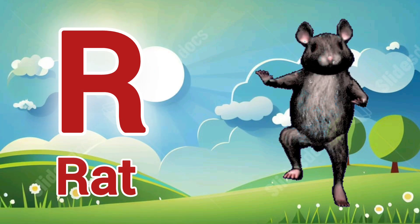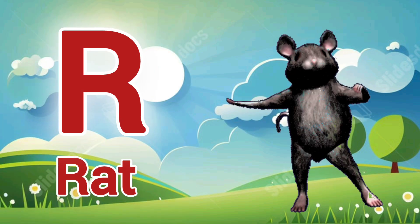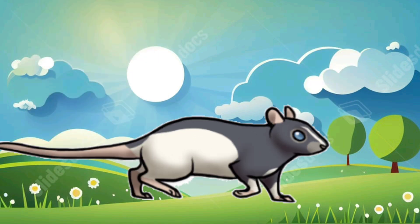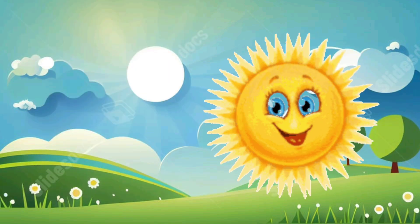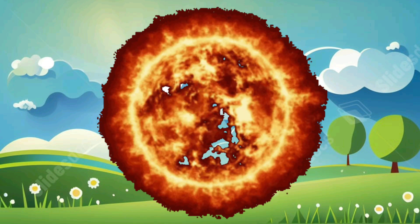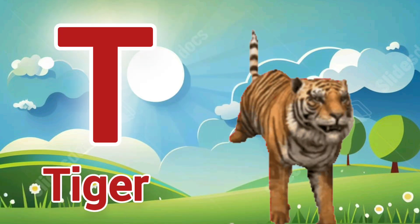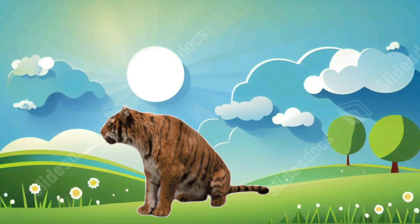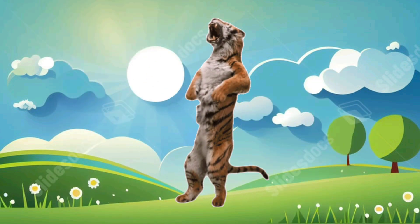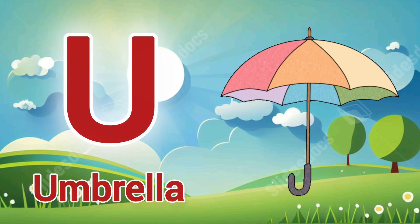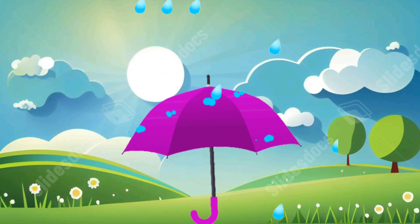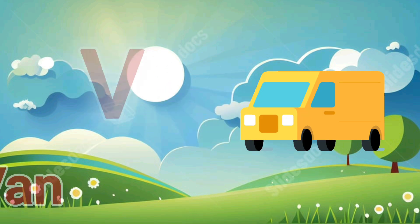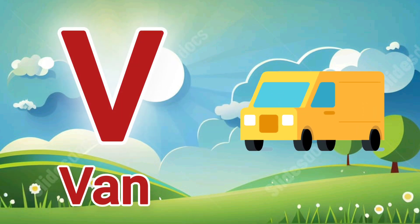R for Red. S for Sun. T for Tire. U for Umbrella. V for Van.